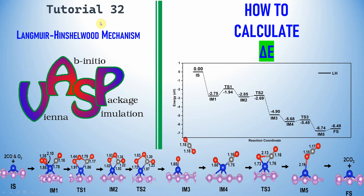Dear friends, this is tutorial 32 in VASP. In this tutorial you can learn how to calculate delta E for the Langmuir-Hinshelwood mechanism, generally called the LH mechanism.